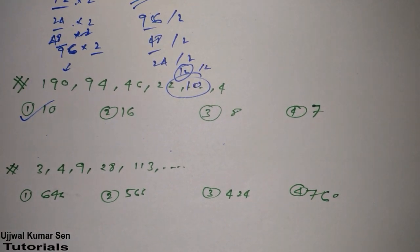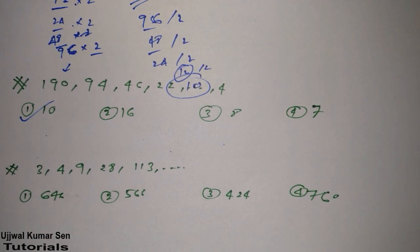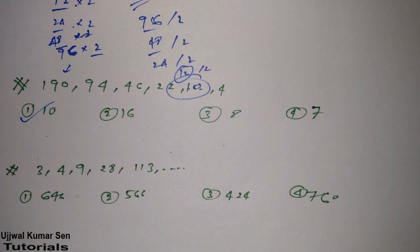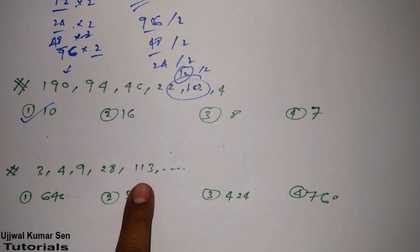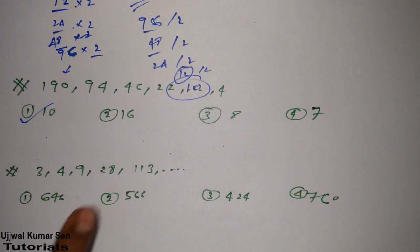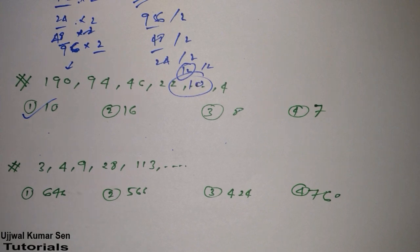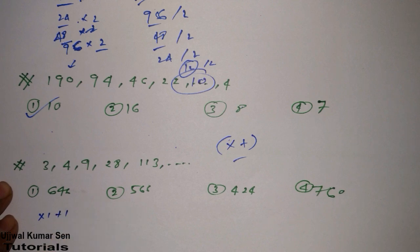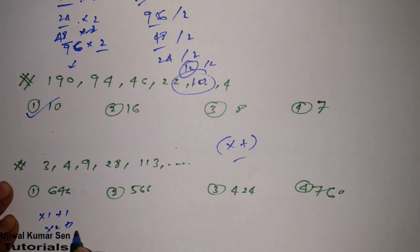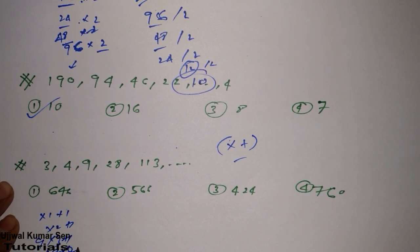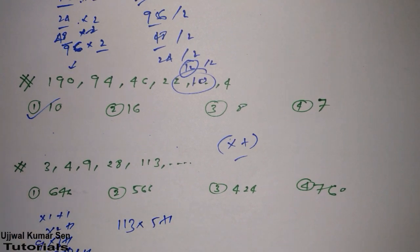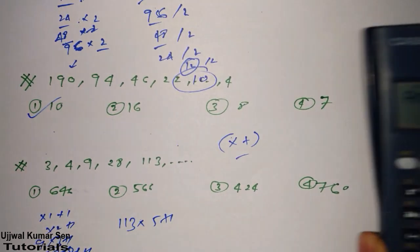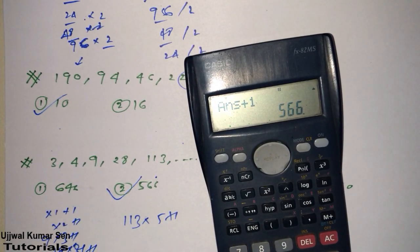Now go for the next question. That is 3, 4, 9, 28, 113. See here the pattern. It is increasing little by little, but again it is increasing abruptly. There is no incremental growth—it is exponential growth here. That means they are using multiple sign here anywhere, with addition or something else. Whenever it is increasing, that means they are using multiple and plus. What they are using? 3 into 1 plus 1. You can see here: 4 into 2 plus 1, 9 into 3 plus 1, 28 into 4 plus 1. So 113 into 5 plus 1. What is the answer? 113 multiple 5 plus 1, so 566 is the right answer for this question.